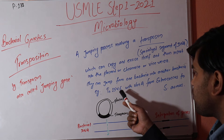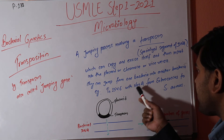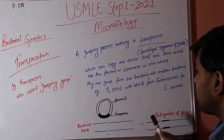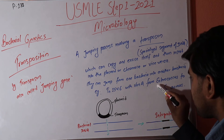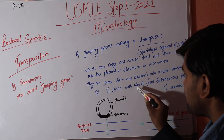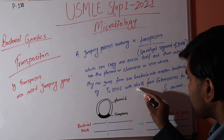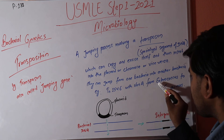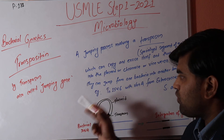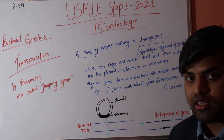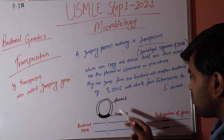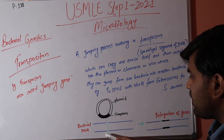An example is TN1546, which carries the vancomycin resistance gene (vanA), transferred from Enterococcus to Staphylococcus aureus. The Enterococcus organism contains this vancomycin resistance genetic information that can be transferred to Staphylococcus aureus by means of transposition, also known as the jumping gene.